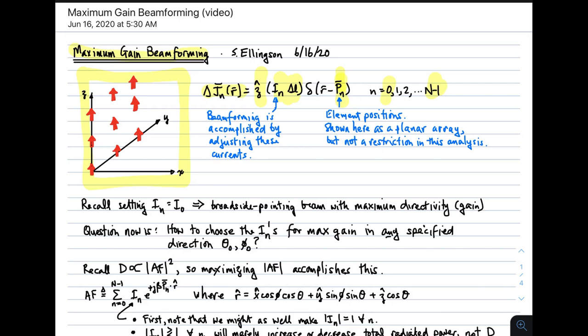Now recall that setting I_n equal to I_nought, that is making all the current moments equal in magnitude and phase, results in a broadside pointing beam with maximum directivity, that is maximum gain. So now the question is how to choose I_n's for maximum gain in any specified direction. In other words, we already know the solution for broadside pointing. Now what's the solution for a beam which points in this direction, theta nought, phi nought?